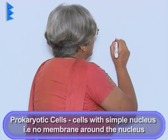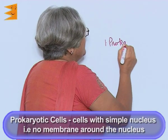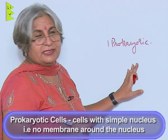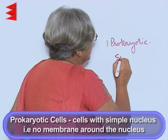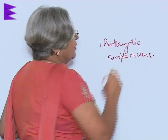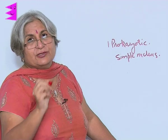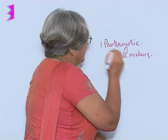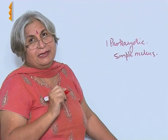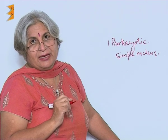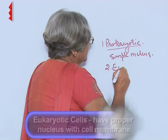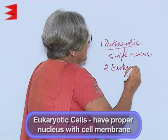Cells are categorized as prokaryotic cells — 'pro' means simple or primitive, and 'karyotic' refers to nucleus — so cells with a simple nucleus are called prokaryotic. Simple nucleus means there is no nuclear membrane, no membrane around the nucleus.